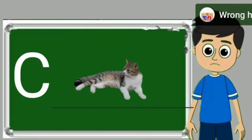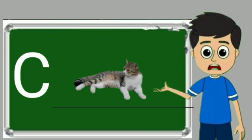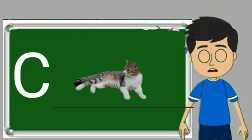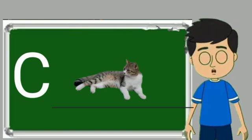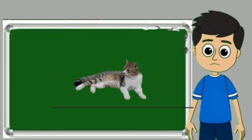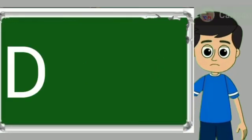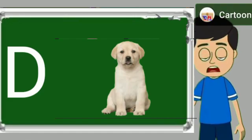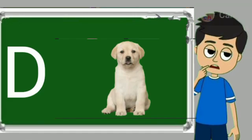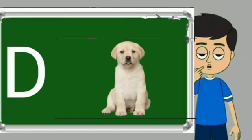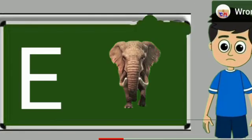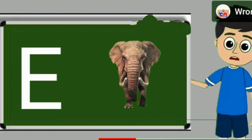C for cat. Cat means billy. D for dog. Dog means kutta.